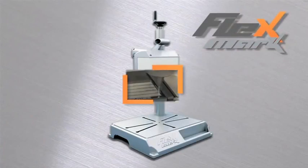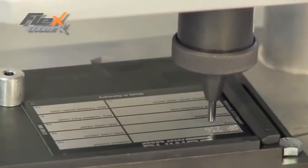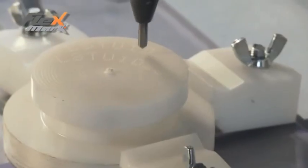Flexmark incorporates dot-peen technology. Marks are formed by a carbide stylus actuated by an electromagnetic solenoid. The result is a clear, permanent mark regardless of the material.